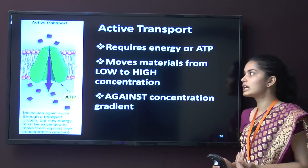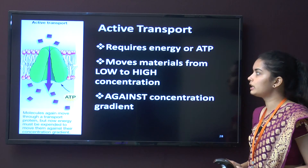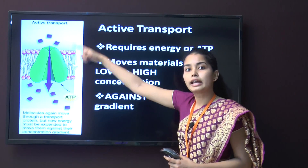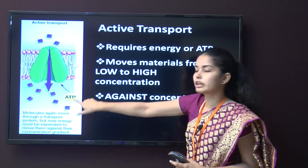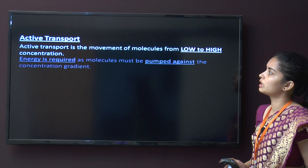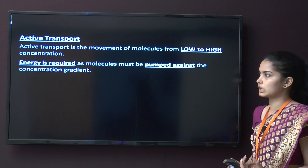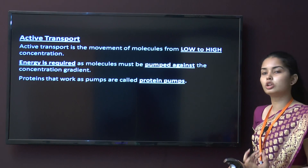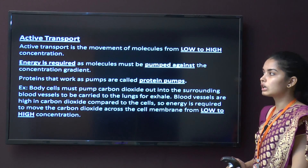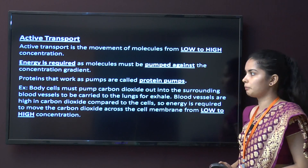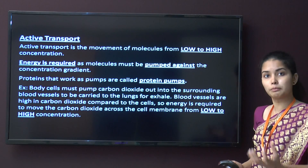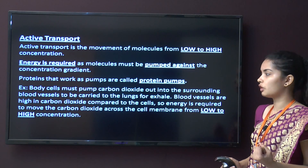Active transport requires energy (ATP) and moves materials from low concentration to high concentration — it is against the concentration gradient and therefore requires ATP. It is the movement of molecules from low to high concentration. Energy is required as molecules must be pumped against the concentration gradient. Proteins that work as pumps are known as protein pumps.